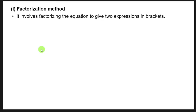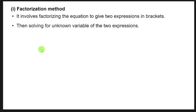Let's start with the factorization method. This method involves factorizing the equation to give two expressions in brackets. Whenever we are factorizing a quadratic equation, it involves factorizing to give two expressions in brackets, then solving for the unknown variable of those two expressions.